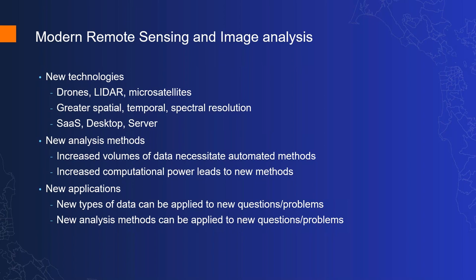Remote sensing technologies are advancing so rapidly. There are many new technologies, starting with emerging data collected by drones, LiDAR, and microsatellites — all often coming in greater temporal and spatial resolution. In terms of deployment, we now have options for the desktop, server, private cloud, or software as a service, all interconnected so you can share one workflow across deployments. The increased volume of data makes it necessary to have faster and more automated methods, leading to new and refined analysis methods such as machine learning and deep learning, which have been adopted across various domains.